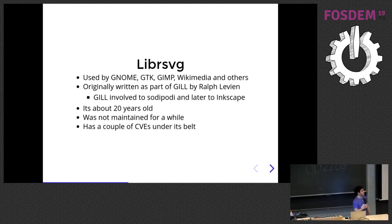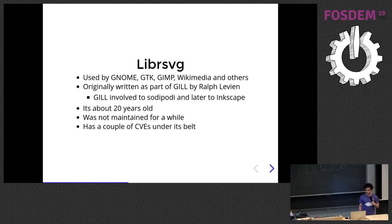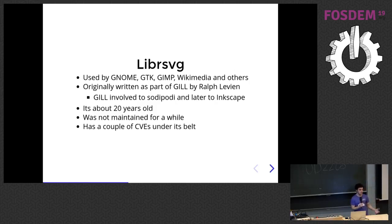LibrSVG is the first major library that got Rust code involved. It's used by GNOME, GTK, GIMP, and Wikimedia. It was originally written as part of GILL by Ralph Levien. GILL is the predecessor to the GNOME illustration program which later evolved into Sodipodi and is now Inkscape. It's about ten years old.